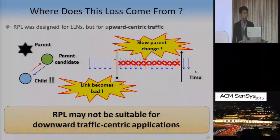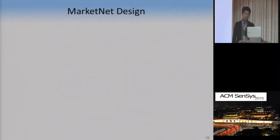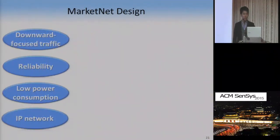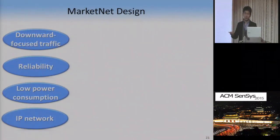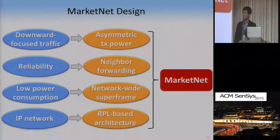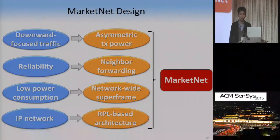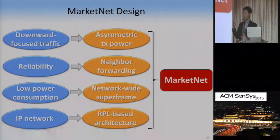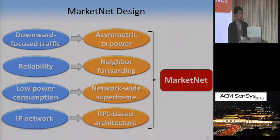Therefore, RPL is not suitable for downward-traffic-centric applications. We have shown that our target application has downward-centric traffic, our target environment has very dynamic link characteristics, and RPL cannot support our target application in this environment. So we designed MarketNet. We consider both application requirements and environmental challenges when designing MarketNet. Specifically, our MarketNet has four design elements: asymmetric transmission power, neighbor forwarding, network-wide superframe, and RPL-based architecture.